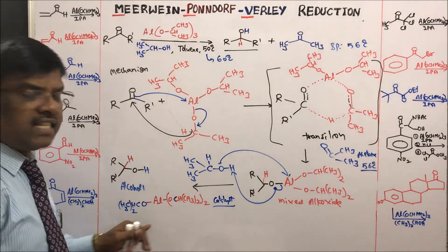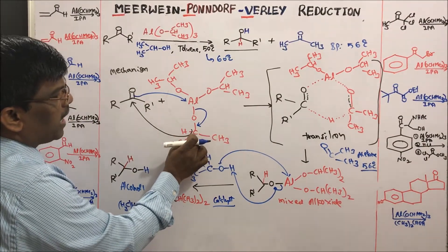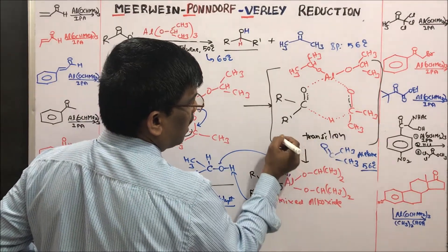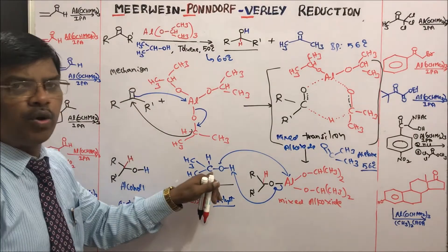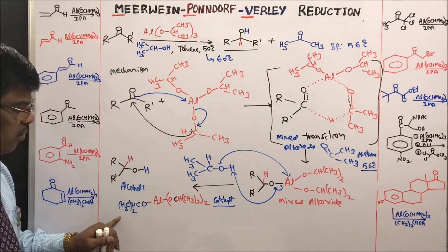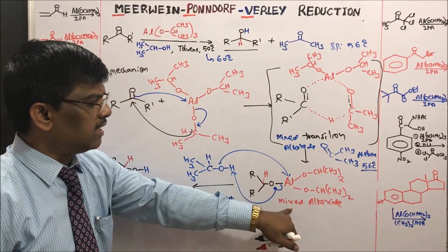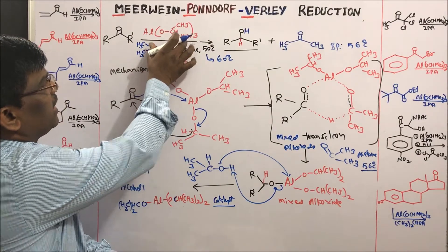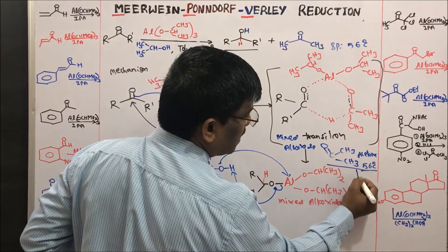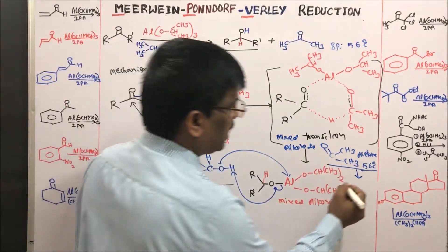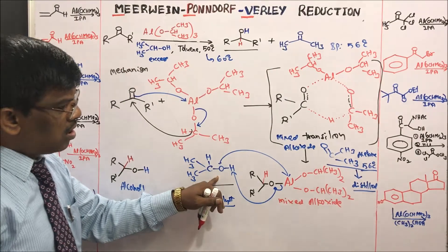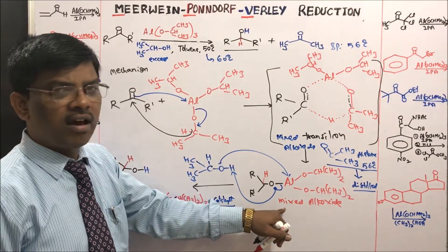The mechanism involves migration of hydride from isopropoxide to the carbonyl compound, forming a mixed alkoxide transition state. The mixed alkoxide takes a proton from the solvent isopropyl alcohol, which then re-attaches to aluminum isopropoxide — regenerating the reagent as a catalyst throughout the reaction. During the reaction, acetone is liberated and must be distilled out.